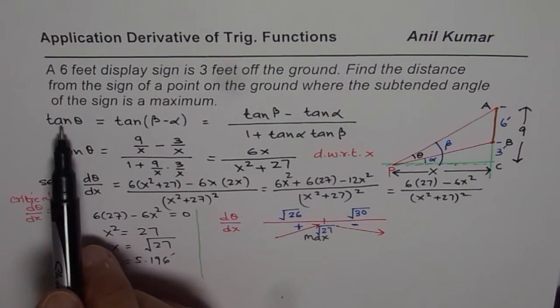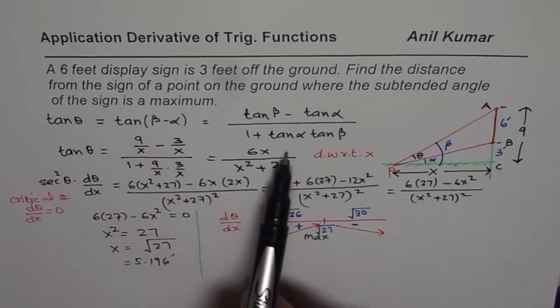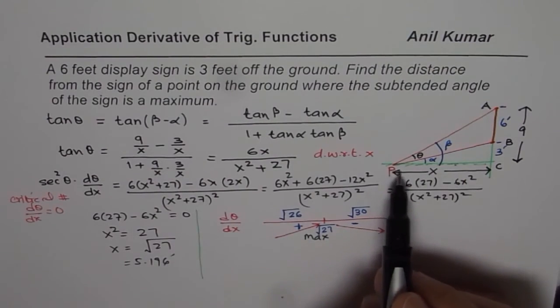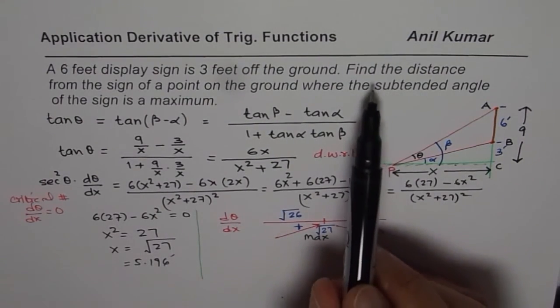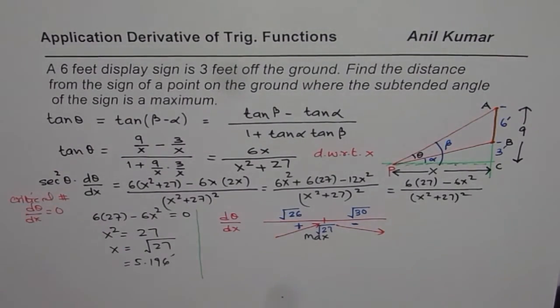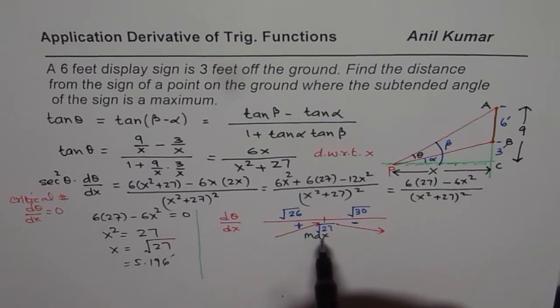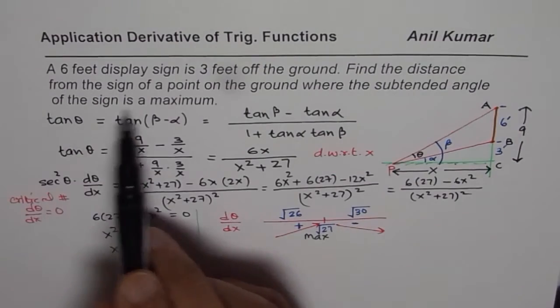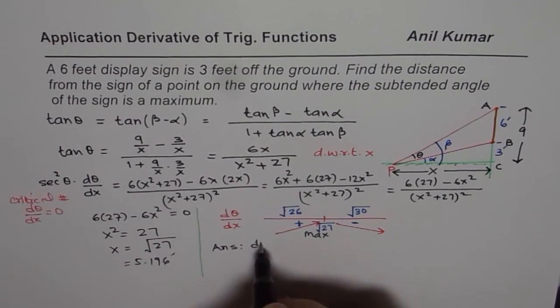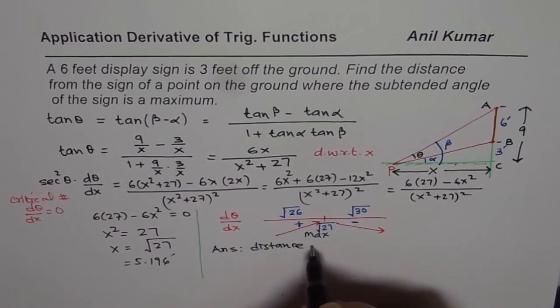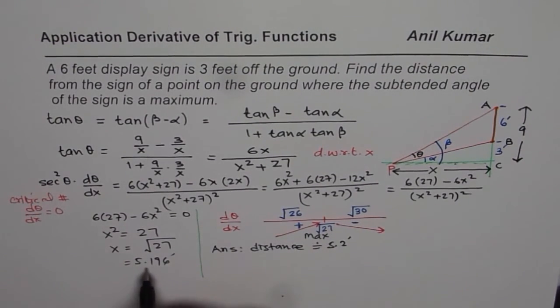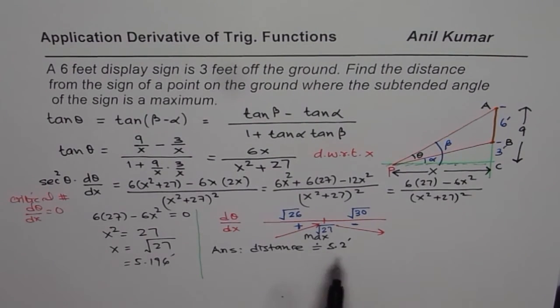Now let's get back to the angle itself. So we started with tan theta equals to all this. So what is theta? We have to still find that, right? So what is theta? Distance we know. How far away? So say find the distance from the sign of the point on this where the subtended angle is missing. Okay. Now, so in this particular example, we need to find the distance, correct? So the distance is correct, so we get our answer and the answer is distance should be approximately 5 point, let's say 2 feet, right? 5.196, right? 5.2 feet. So that is the distance.